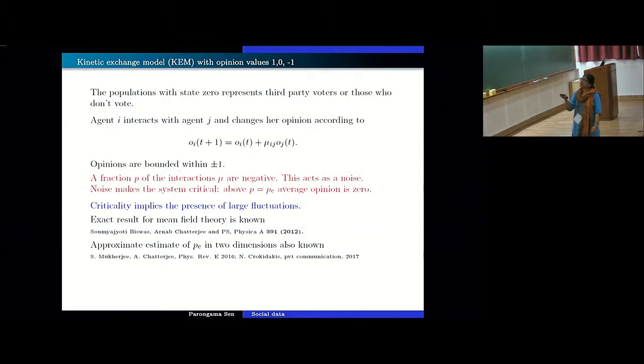And what we do here is this mu_ij usually we take plus minus 1. It can be something else also. It has a distribution. But the important quantity is the fraction p of the interactions mu are taken to be negative. And this acts as a noise. And what happens is that as we increase p, then we see that there is a critical value of p above which there will be no order. And these things can be dealt in a mean field manner in the sense that every agent interacts with every other agent but also one can consider a lattice on which you have only neighbors interacting. In that case also you have a transition and these cases have been well studied quite some time back.